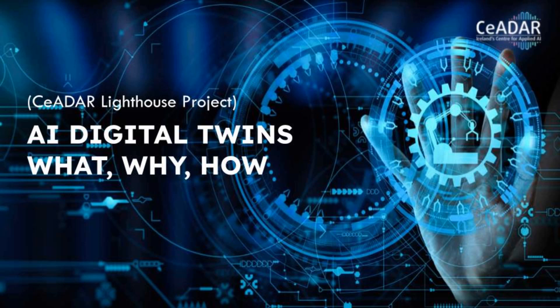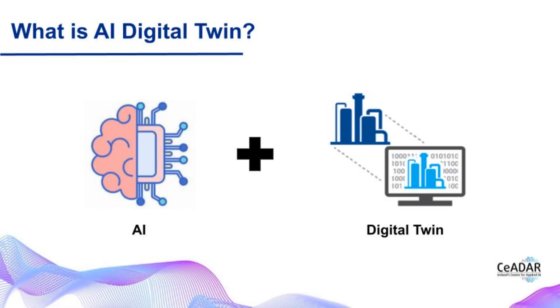Firstly, let's revisit what an AI digital twin is. It's an exciting concept that fuses ideas from artificial intelligence and the Internet of Things to create digital models of real-world objects, systems, or processes. This model can then be used to adjust and train variables to study the effect on the real-world object.